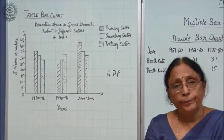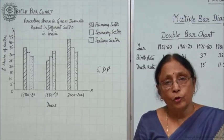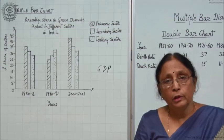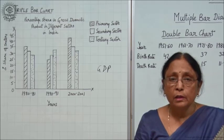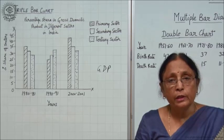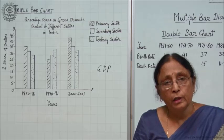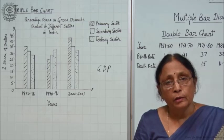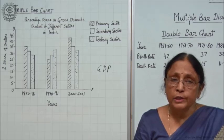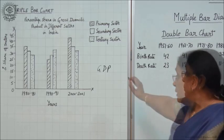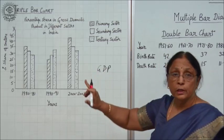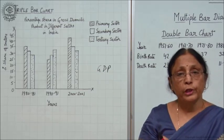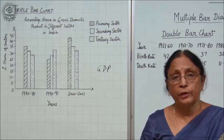We are taking the percentage share in Gross Domestic Product across different sectors in India. GDP stands for Gross Domestic Product — G for Gross meaning total, D for Domestic meaning within the domestic territory of the country, not including production outside. So GDP is the total production within the domestic territory of the country.